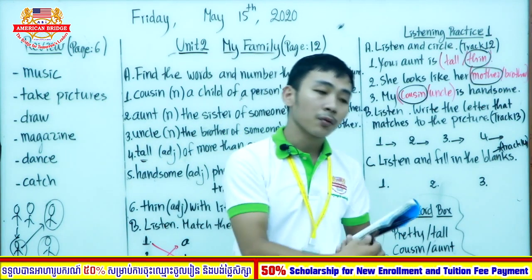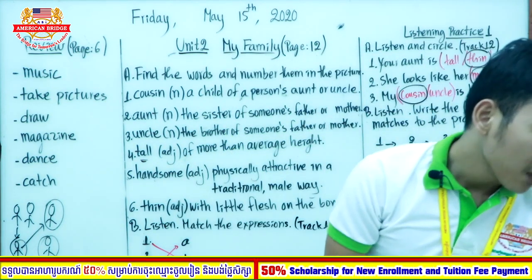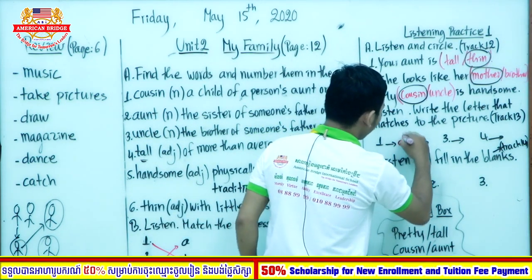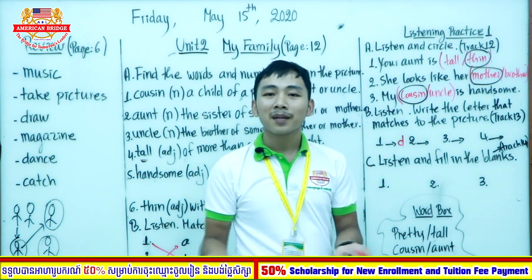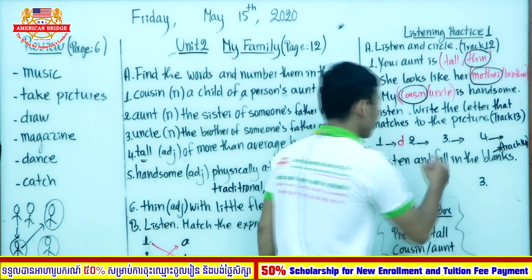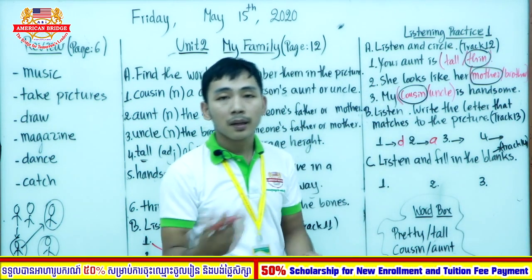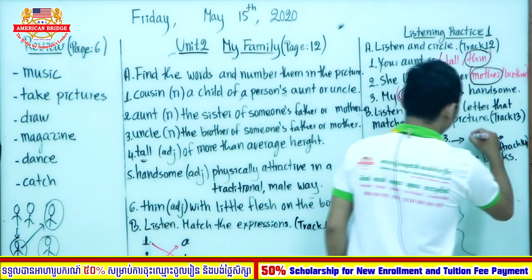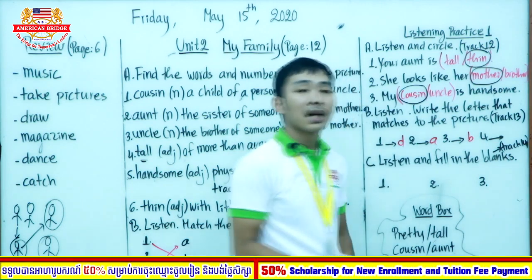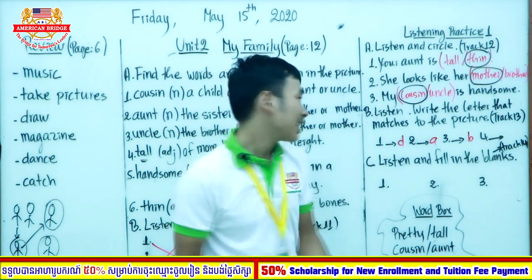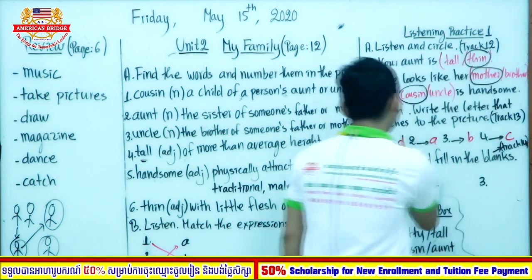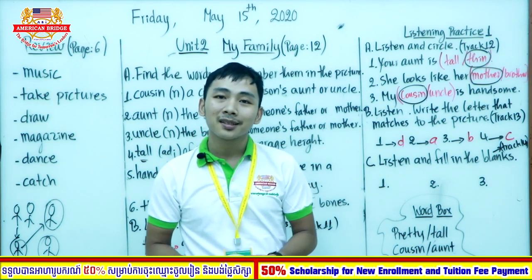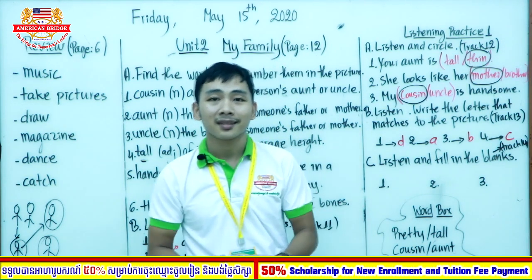Welcome back. Let's check the answers together. Number 1 is letter D. Number 2 is letter A. Number 3 is letter B. Number 4 is letter C. So the order is D, A, B, C. Did you get the right answers? If you made a mistake, you can make a correction.